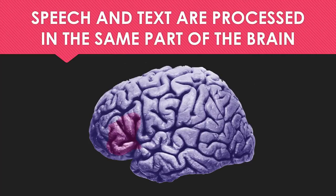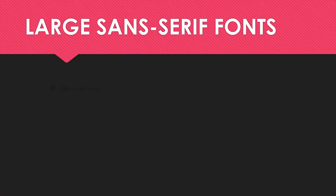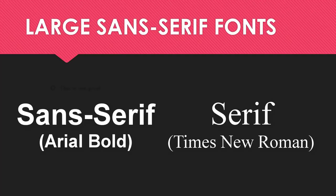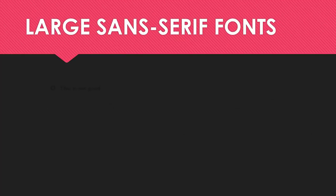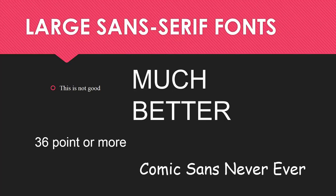Speech and text are processed in the same part of the brain. Now that you know a little bit about assertion evidence and slide making, let's look at two quick design tips that will help you out. First, use large sans-serif fonts. Sans-serif means none of the little curly cues at the ends of letters — things that are blocky and easy to read. If you have one point, there's also no need for bullets. Make it large, at least 36 points or more.